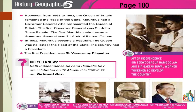Both Independence Day and Republic Day are celebrated on 12 March. It is known as our national day. After independence, Sir Seewoosagur Ramgoolam and Sir Gaëtan Duval worked together to develop the country. From 1968 to 1992, it was the Queen of Britain who remained the head of state, but from 1992, the Queen was no longer the head of state.